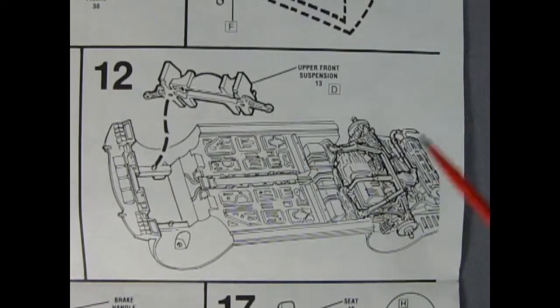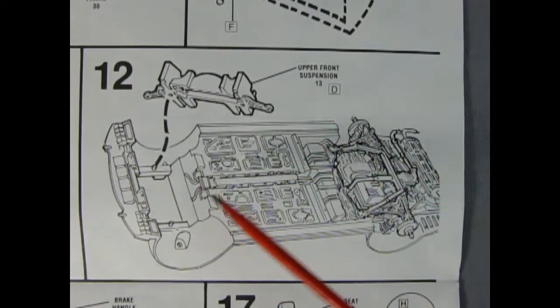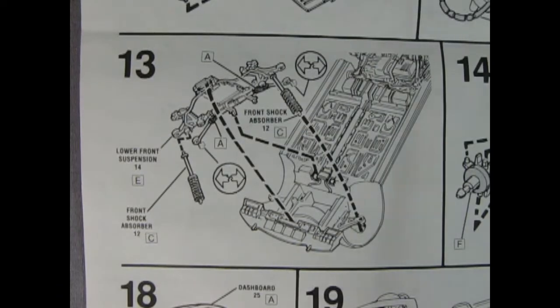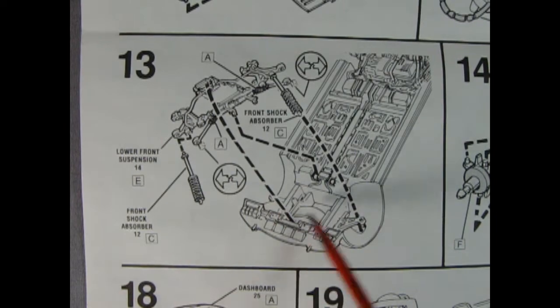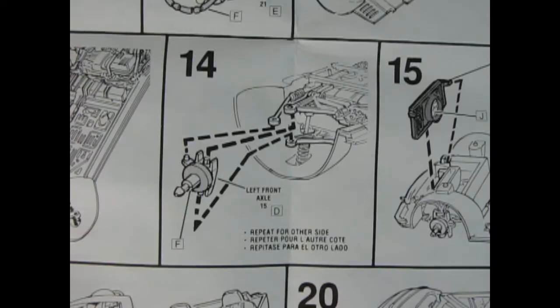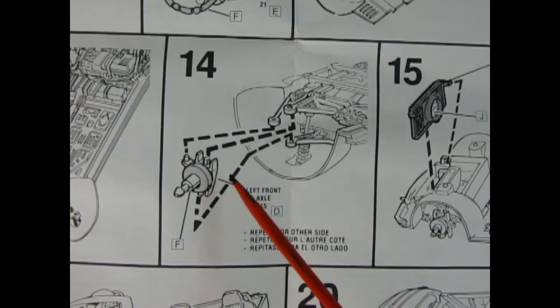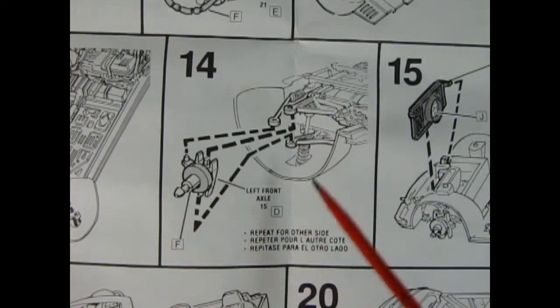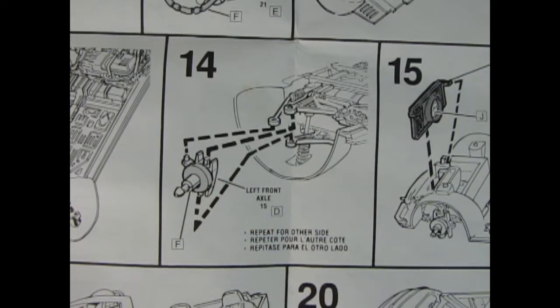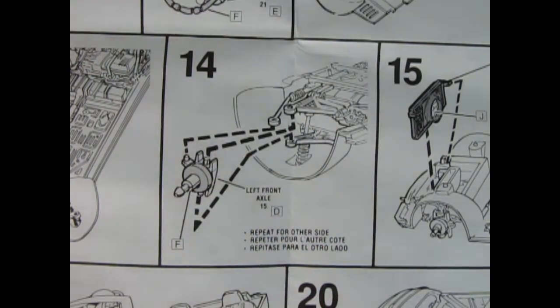Panel 11 shows the rear suspension component being clicked into place on the bottom of our chassis. Remember, we're looking at this from the bottom up, not the top down. Panel 12 shows our upper front suspension being clicked into place. In panel 13, we get our lower front suspension with these great shock absorbers all clicking into place on our chassis.